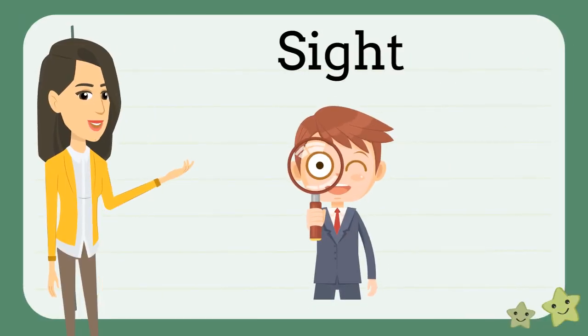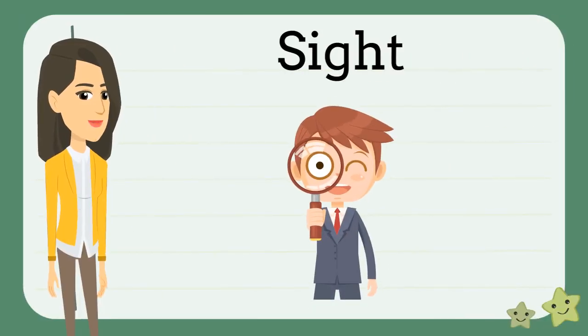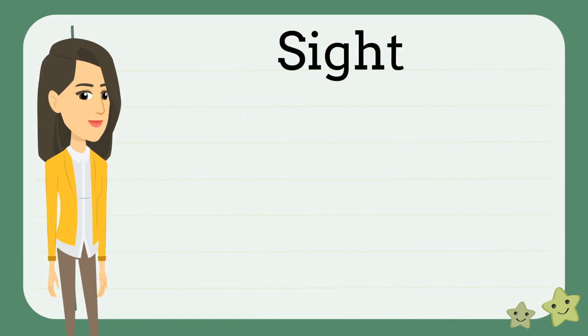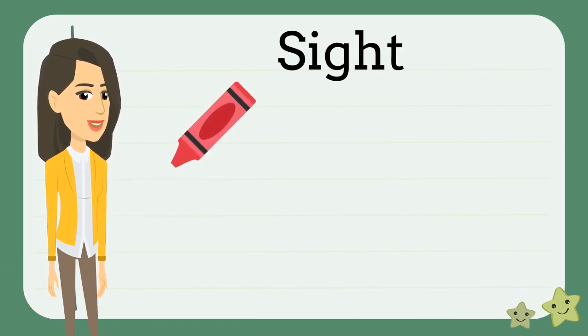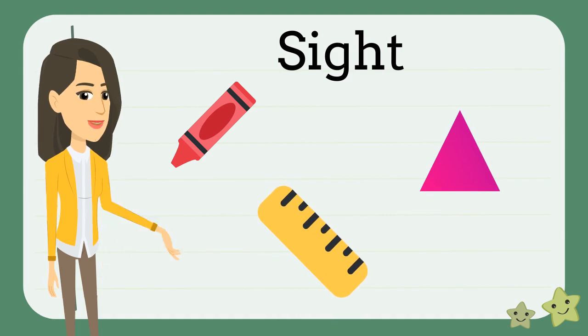The first sense we're going to talk about is the sense of sight. You use your eyes to see color, shape, and size of something, and to look closely at all of its parts.